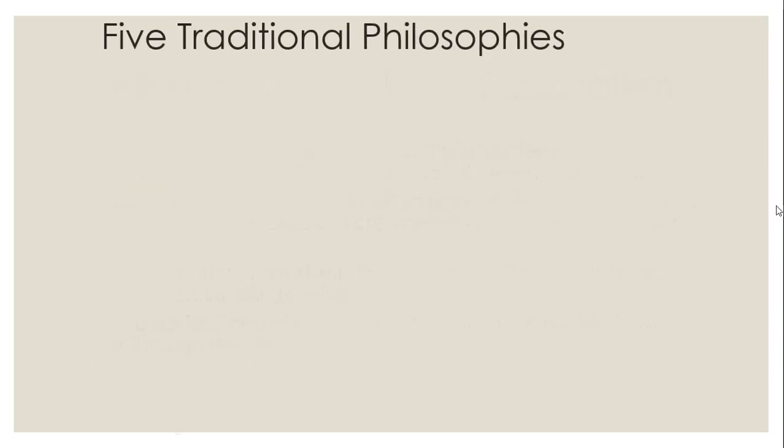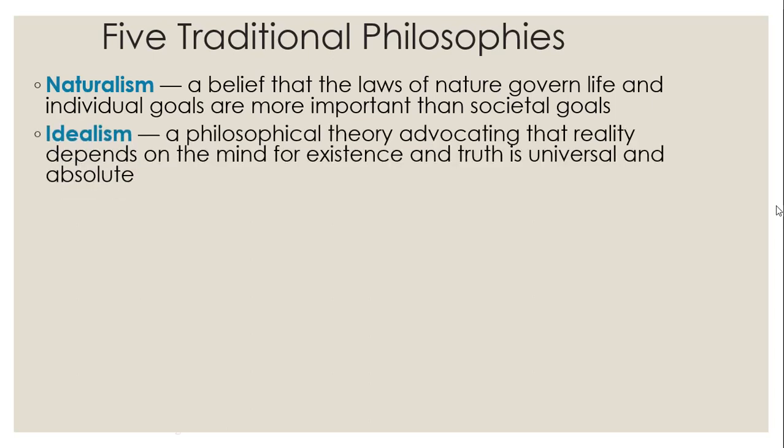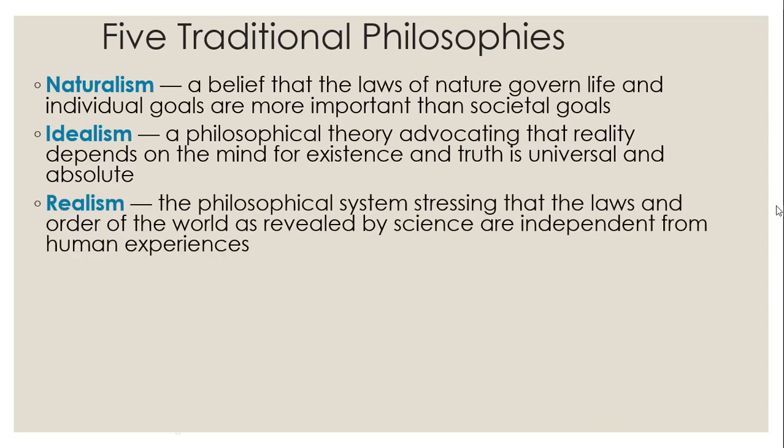Five traditional philosophies: Naturalism is a belief that the laws of nature govern life and individual goals are more important than societal goals. Idealism is a philosophical theory advocating that reality depends on the mind for existence, and truth is universal and absolute. Realism is the philosophical system stressing that the laws and order of the world as revealed by science are independent from human experiences.